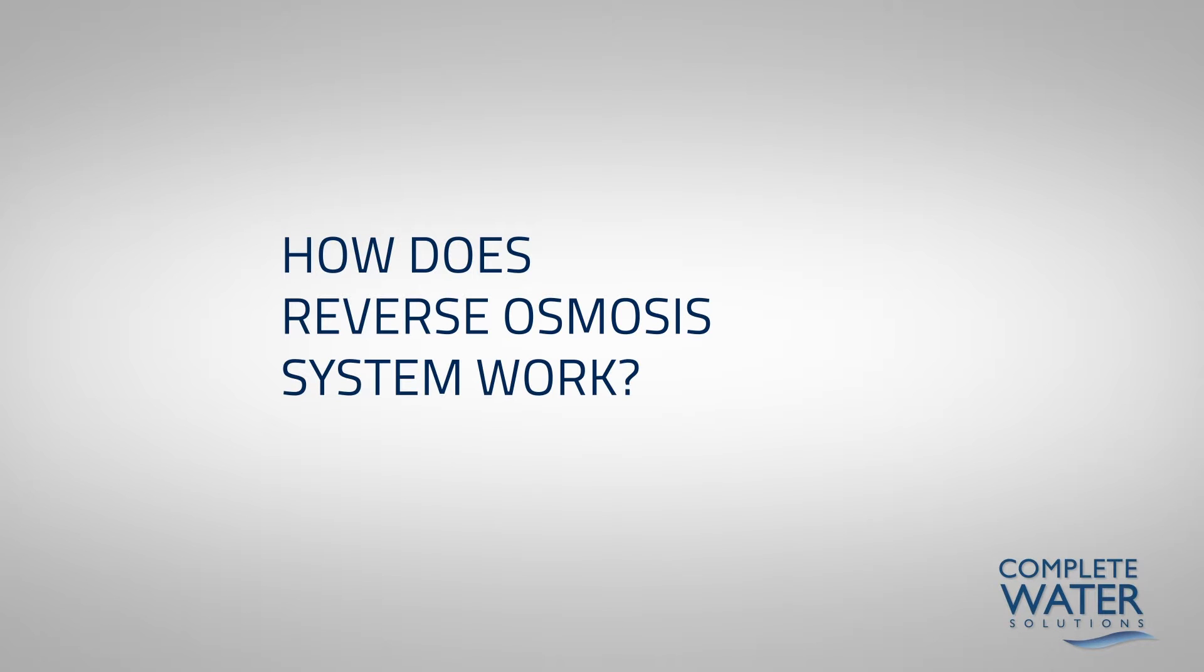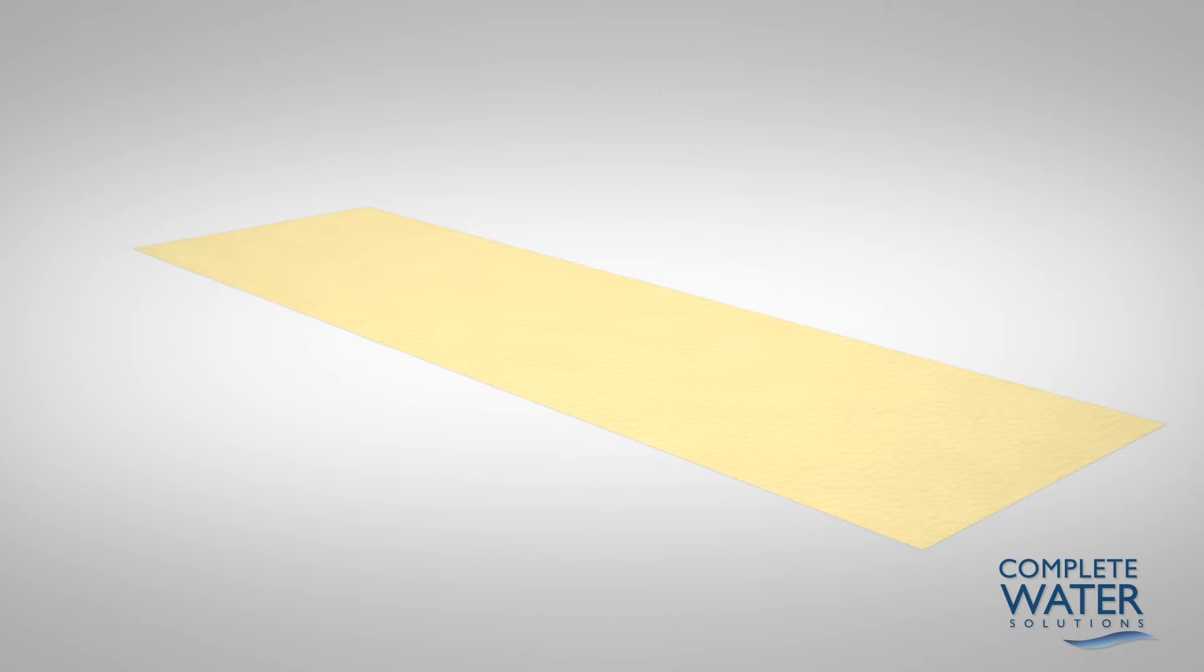How does a reverse osmosis system work? A reverse osmosis membrane is constructed from a membrane flat sheet. They are comprised of three layers.